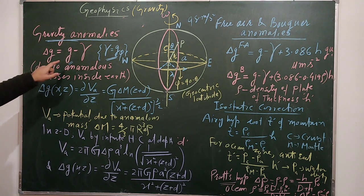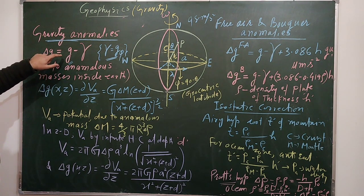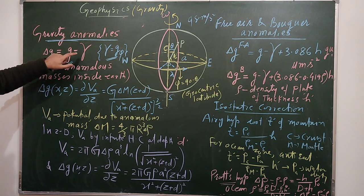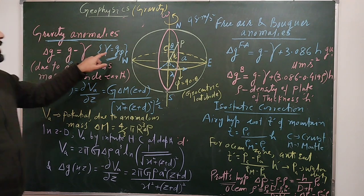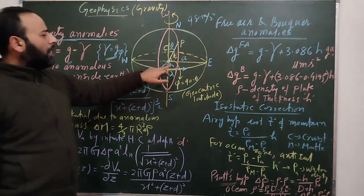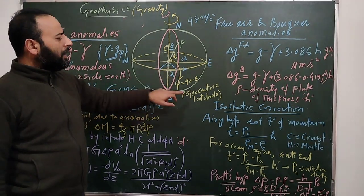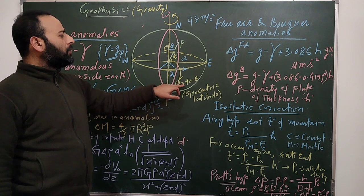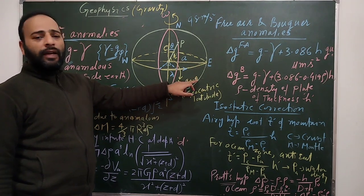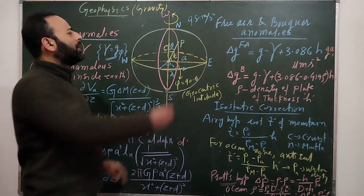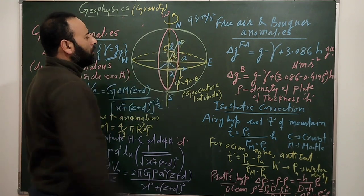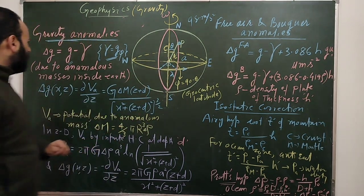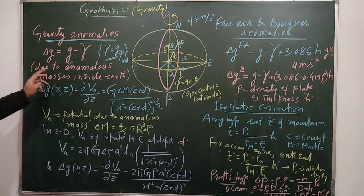Gravity anomaly is simply the difference: g minus gamma, where gamma is the value of g at an angle phi — the geocentric latitude, where phi equals 90 minus theta — at a point P which is at a distance r.